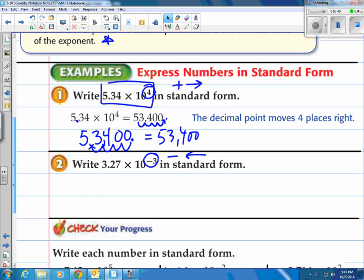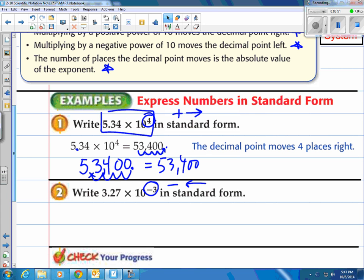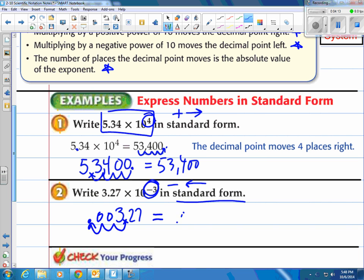Again, the decimal point moves four places to the right. The exponent tells you which way to move. Let's look at that second one. Here we are: 3.27 times 10 to the negative third in standard form. Again, let's write it as a regular number. So we take our 3.27 and we move it three spots to the left now because it's a negative exponent. That's one, two, three. There's our new dot. Fill in with zeros and there's our answer: 0.00327.